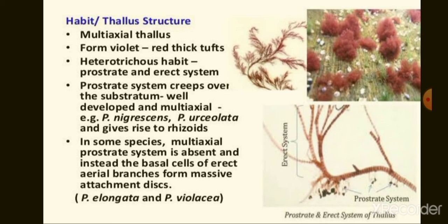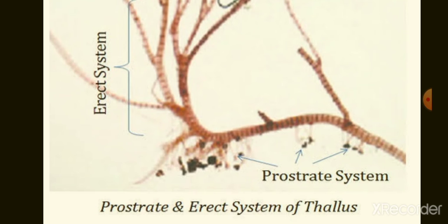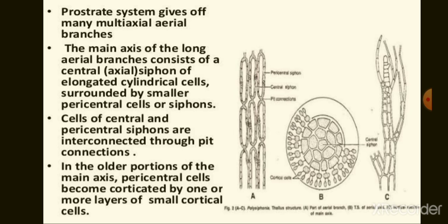The plant body is red or dark blue colored, axial in habit and few centimeters in length. The plant body is heterotrichous, differentiated into basal prostrate and aerial erect systems. The prostrate part is attached to the substratum with many elongated and septated rhizoids. These rhizoids sometimes form an attachment disc to anchor to the substratum. The erect or upright system is laterally or dichotomously branched.